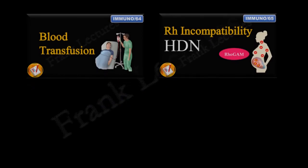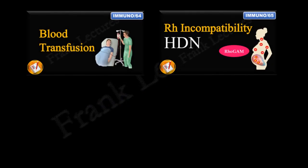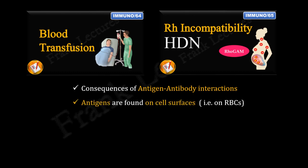We have covered blood transfusion reactions and hemolytic disease of the newborn previously on this channel. The similarity between these two conditions is that both are consequences of antigen-antibody interactions, and in both cases antigens are found on cell surfaces — for example, ABO and RH blood group antigens are present on red blood cells. The antibodies involved belong to the IgG and IgM class.